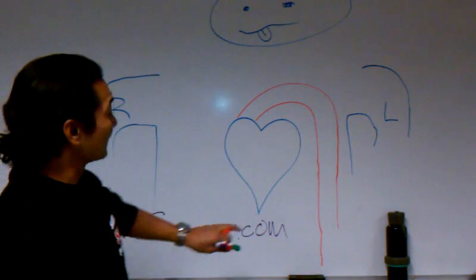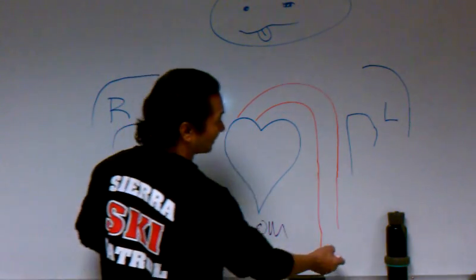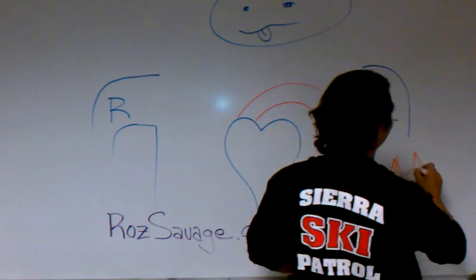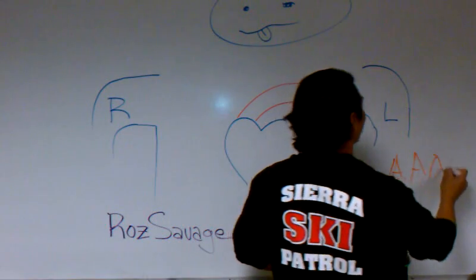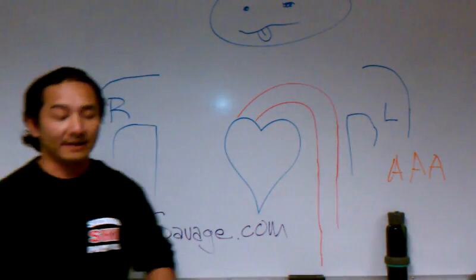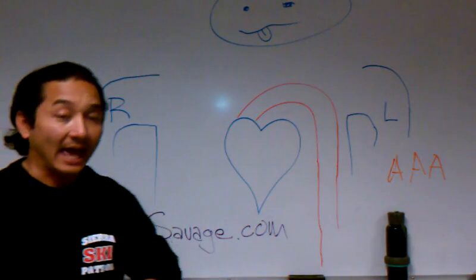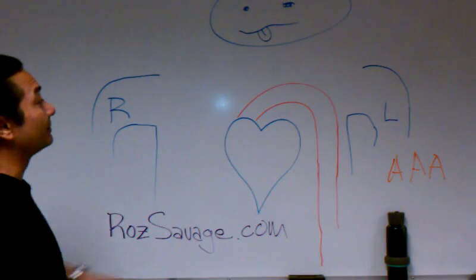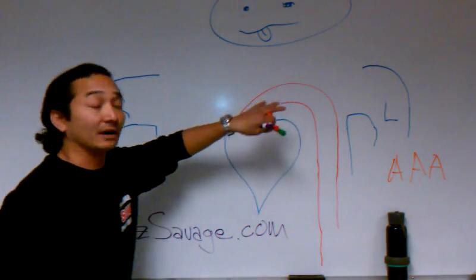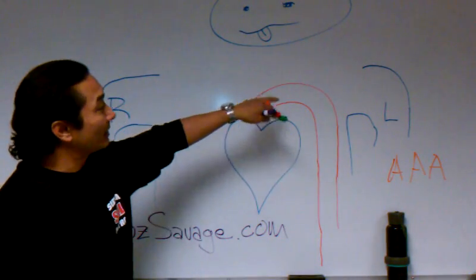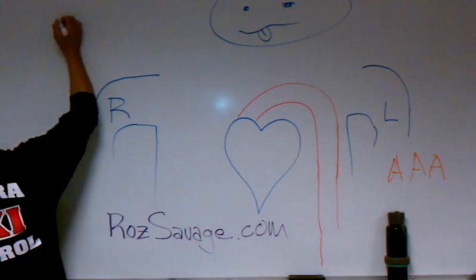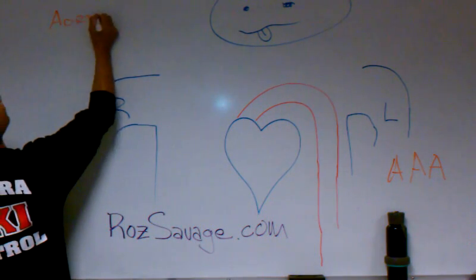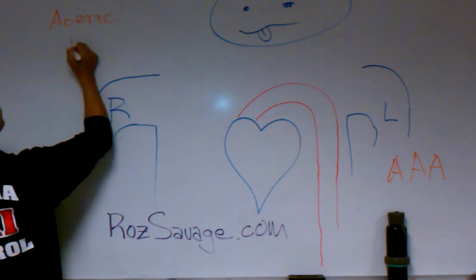A lot of people have heard about AAAs. AAAs happen down here — that's an abdominal aortic aneurysm. Not to be confused with what happens up here. Up here is an aortic dissection.